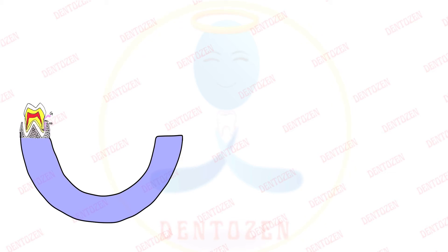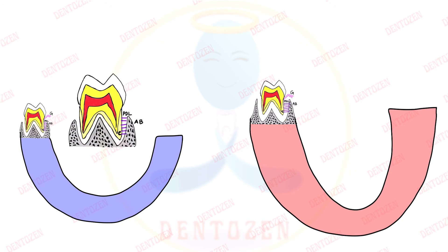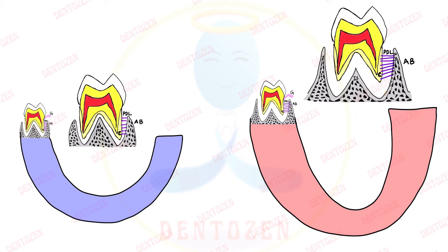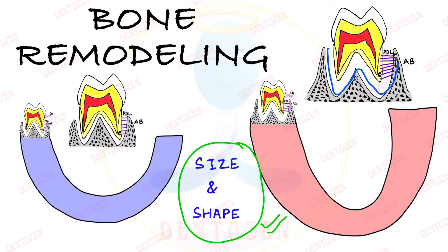Hello everyone, welcome to Tentison. Here you can see a picture of the mandible of a child and this is a picture of the mandible of an adult. So what is happening here? There is a change in size and shape of the mandible as the child grows, and the same happens for all the bones of the body, as well as the alveolar bone — the bone which forms the socket for our teeth. This process by which the overall size and shape of our bones is established is known as bone remodeling.